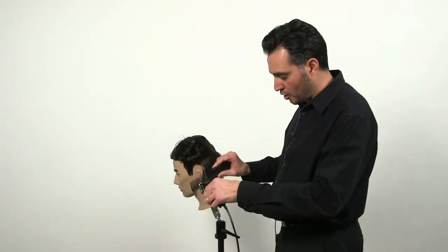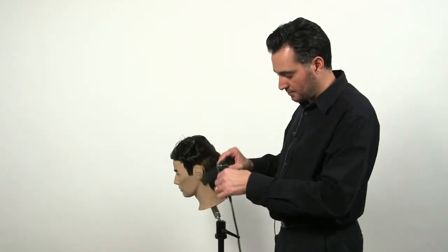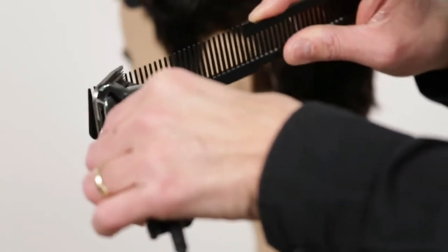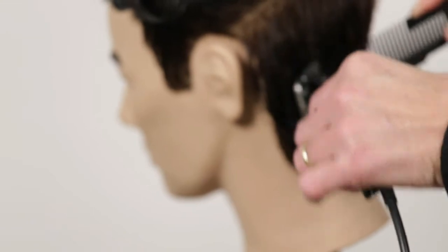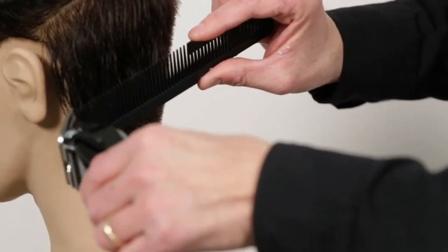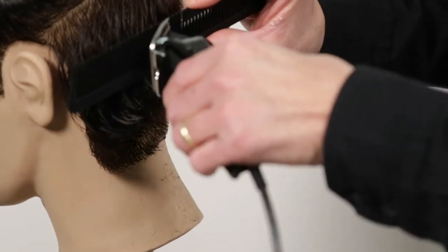When you do the clipper over comb technique, do not put too much pressure on the comb because then it's going to make you have an indentation in the haircut. So you're going to lift up the hair, and then nice and softly, you place the clipper over your comb.